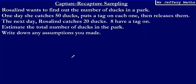In this video we're going to take a look at capture-recapture sampling. We're told that Roslyn wants to find out the number of ducks in a park. One day she catches 50 ducks, puts a tag on each one and then releases them. The next day Roslyn catches 20 ducks and 8 have a tag on. We're asked to estimate the total number of ducks in the park and also to write down any assumptions that we've made.